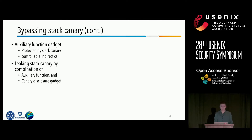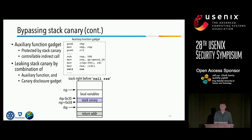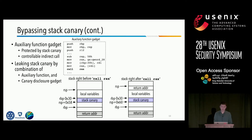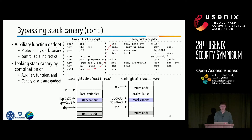The basic idea of the auxiliary gadget is straightforward: the kernel performs a canary check in the function epilogue — it just wants a valid canary before the return address, so we give it one. We first direct execution to the auxiliary function gadget, which creates a fixed stack frame and stores the stack canary before the return address. We make sure the stack frame is the same size as the caller function of copy_to_user. There is an indirect call in the auxiliary function whose target is controllable. We redirect control flow to the canary disclosure gadget. When the canary disclosure gadget fails to copy and returns, it finds the canary installed by the auxiliary gadget, and since all functions in the same kernel thread share the same stack canary, the kernel has no reason to reject our return.